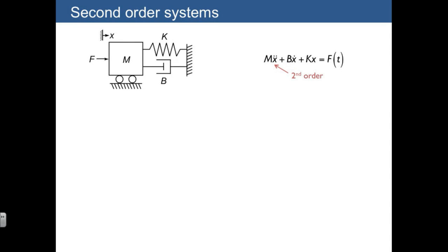Second order systems are systems such as this mass spring damper system, which yields a second order differential equation using m, b, and k as parameters. We already know that the response is going to be composed of a particular solution and homogeneous solution.